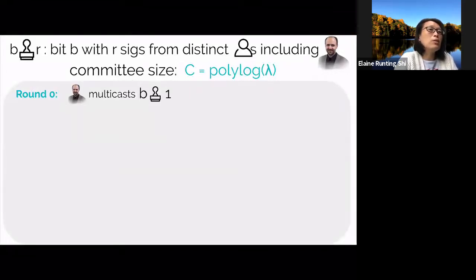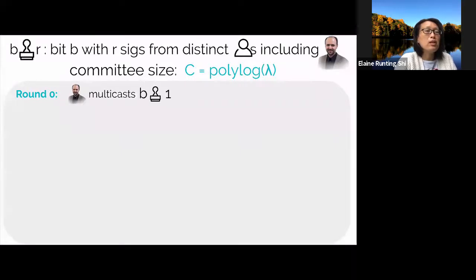Okay, so here's how the Dolev-Strong protocol works. And keep in mind, this is run inside the committee. In the first round, round zero, essentially we do the most natural thing. So we're going to assume that the chair Aguilos is always in the committee. And in round zero, Aguilos basically signs his bit and sends the signed bit to everyone. Note that here, the notation one badge of votes on b means that the bit b is attached with a single signature. And in this case, the signature must be Aguilos's.